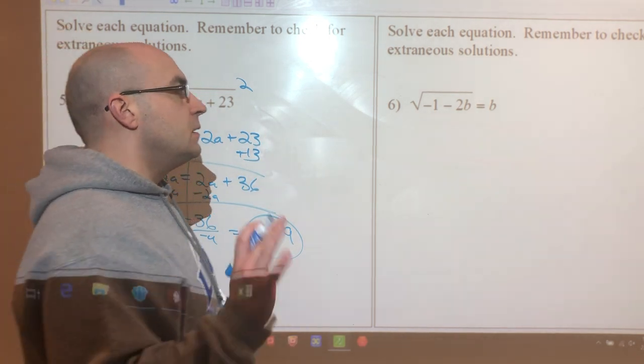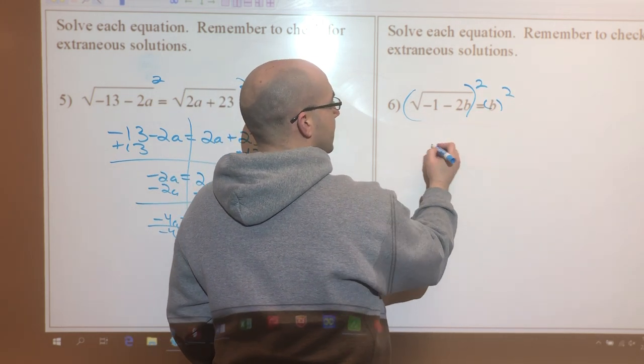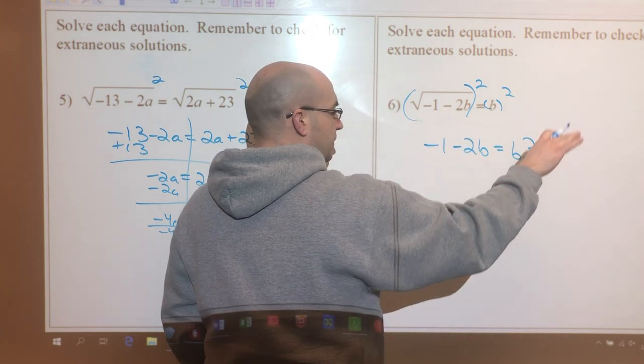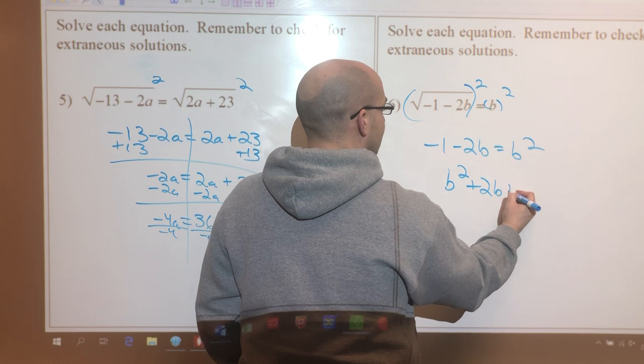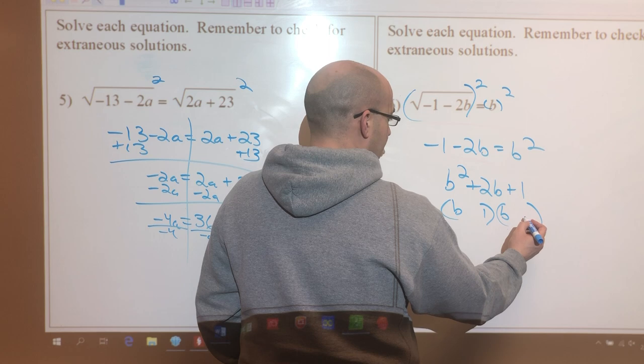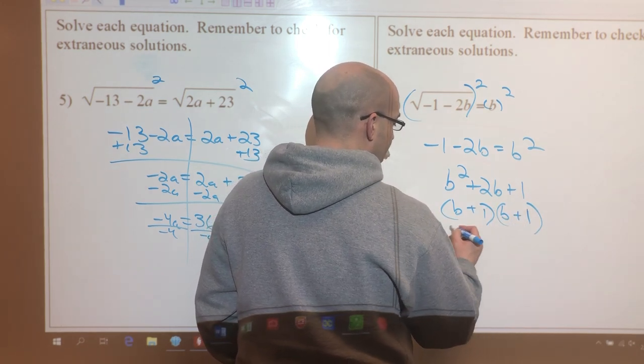Okay, this one here, though, let's check this one out. Again, I'm putting a square on both. So then I have negative 1 minus 2b equals b squared. Shifting everything over to the right-hand side will leave us with b squared plus 2b plus 1. b and b, I know I need a 1 and a 1, they both have to be pluses, so I have b equals negative 1.